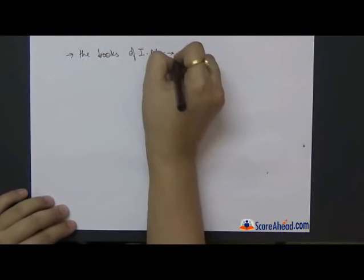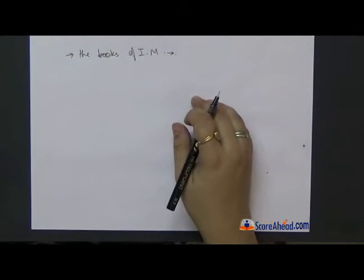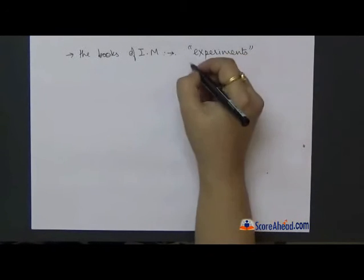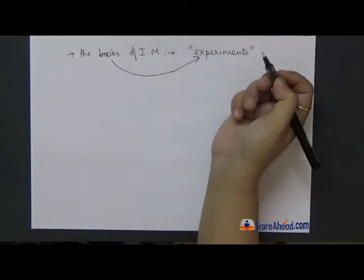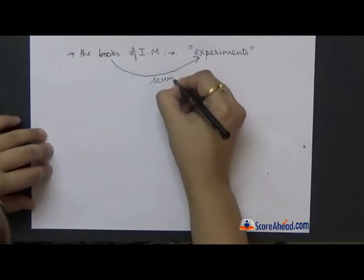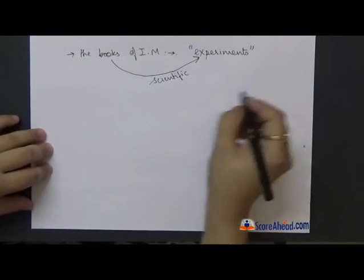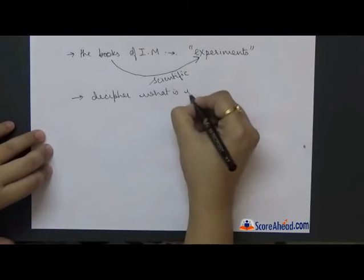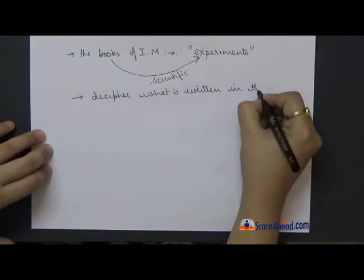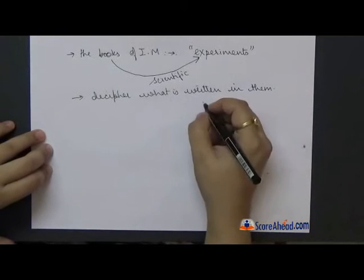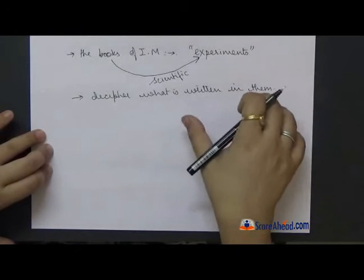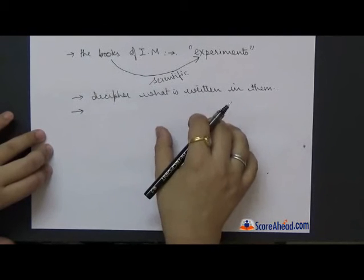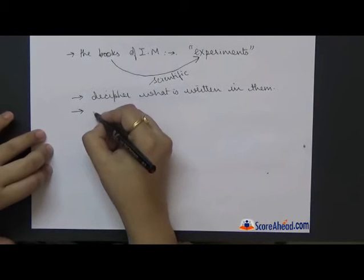What books would they be if you could guess? What was he doing in the parlor all these months? The invisible man was conducting his experiments and so of course these books contain the details of his experiments and the language would be scientific. They are scientific books and Kuss and Bunting are trying to decipher, trying to understand what is written in them.